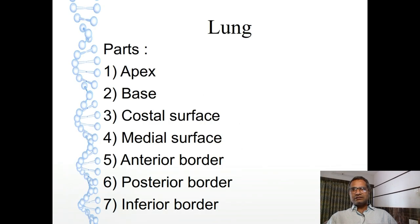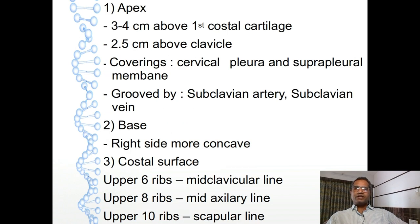Now we'll see gross features of this lung. Parts of lung: lung will show apex, base, costal surface, medial surface, anterior border, posterior border, and inferior border. We'll see all these parts one by one. Apex - it is the uppermost conical part of lung. It lies above the first costal cartilage, or above the clavicle.